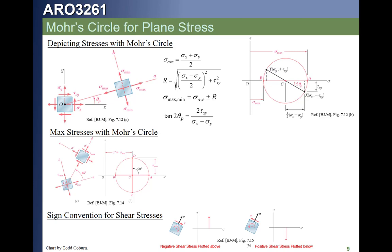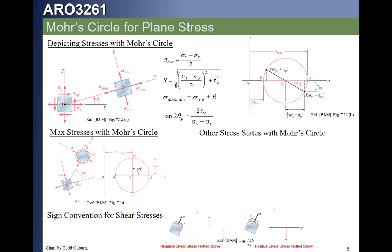Starting from a principal stress state is even easier: we just plot the two principal stresses on the axis — no shear stress on those faces — giving us the diameter. The difference over two gives us the max shear stress values, and we sketch in the circle. This is our average stress at the center.